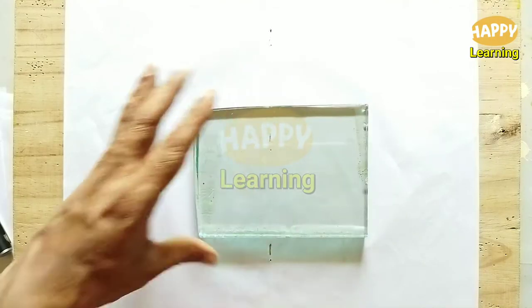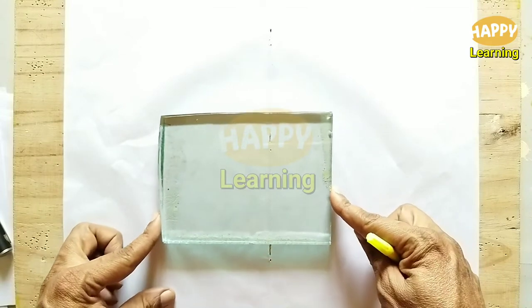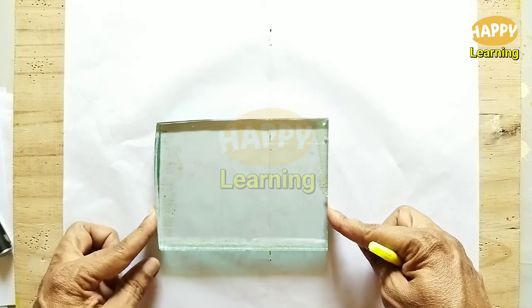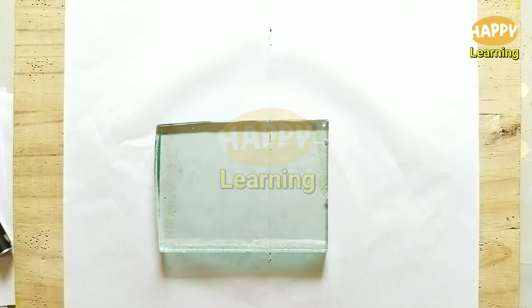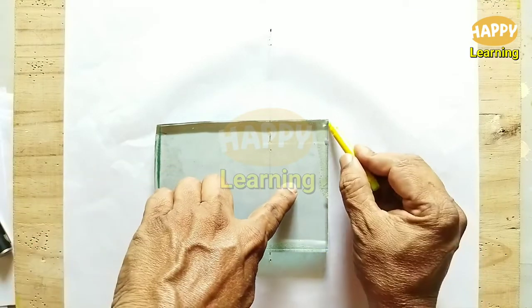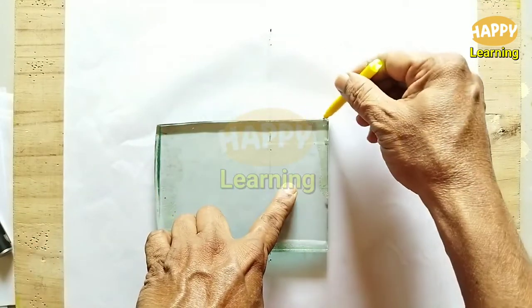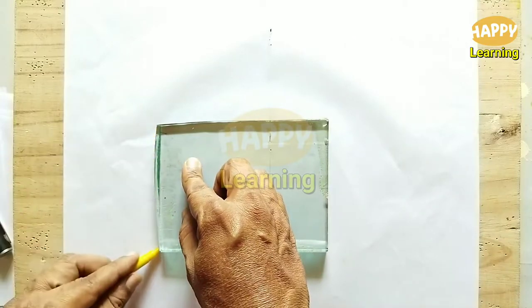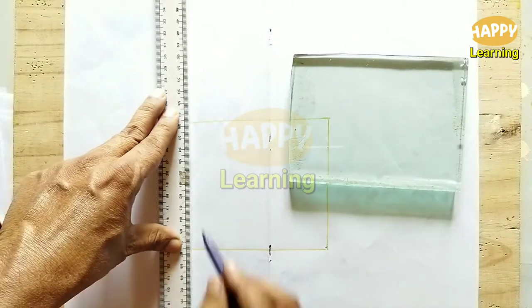Take a drawing board, a white paper or sheet. Select a rectangular glass slab, put it and draw the outline. At one of its corners, draw a straight line.